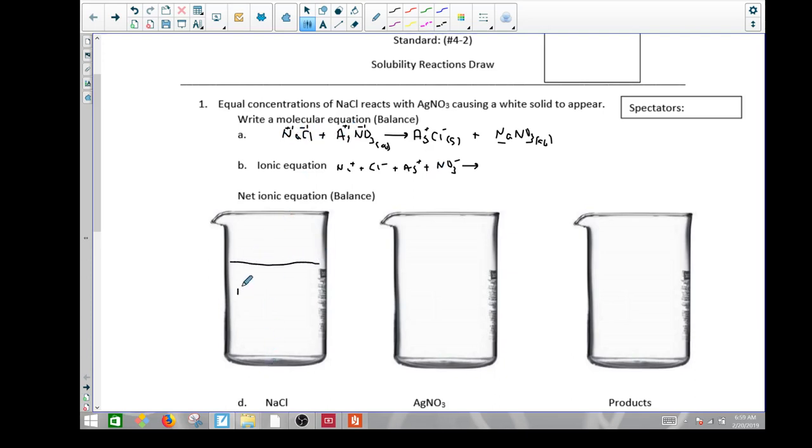I got NaCl here, so Na plus and Cl minus. It says I want equal concentrations, so I'm just going to draw two of them. Na plus, Cl minus. Okay, Ag plus, I'm going to draw a little legend here. Negative is NO3 minus. I have two, Ag plus, and then another nitrate.